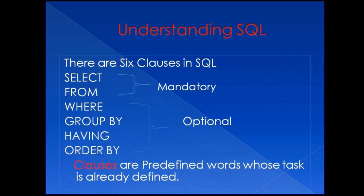There are six clauses in SQL. Clauses are predefined words whose task is already defined — whenever you install any database in your system, these six clauses will automatically get installed. The six clauses are: SELECT, FROM, WHERE, GROUP BY, HAVING, and ORDER BY. Out of these six clauses, the first two — SELECT and FROM — are mandatory, and the remaining four are optional. If I want to write a query, I must specify SELECT and FROM; I can skip WHERE, GROUP BY, HAVING, and ORDER BY if my query doesn't require them.